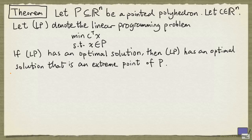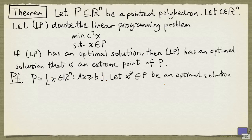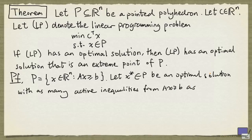So let's look at a proof of this. Assume that P is given as follows. Let x* be an optimal solution with as many active inequalities from Ax ≥ b as possible. In other words, there is no other optimal solution with more active inequalities than x*. And we are going to take A'x ≥ b' consists of all the active inequalities at x*.